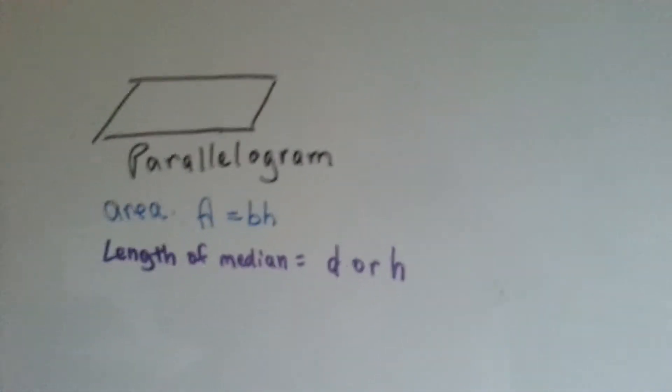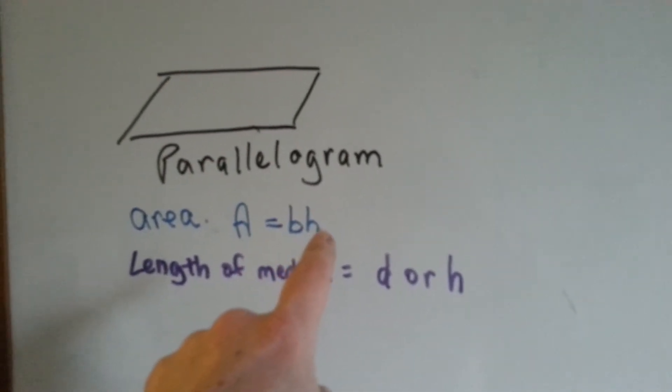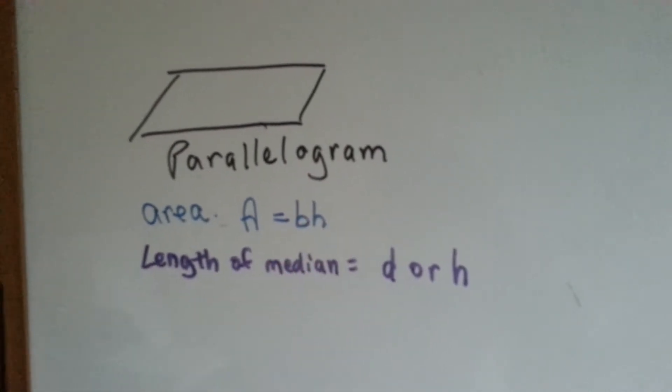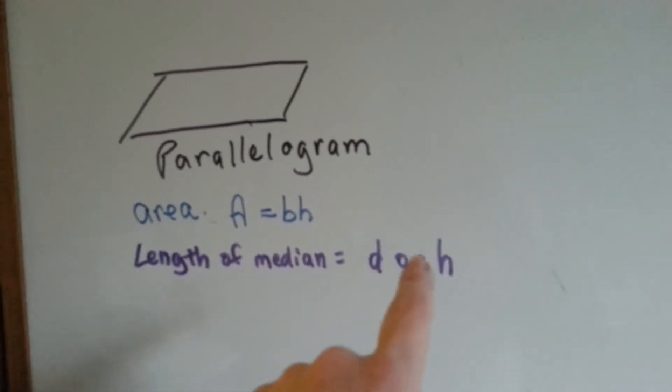The area of a parallelogram is the base times the height, BH, base times height. The length of the median is the diagonal or the height.